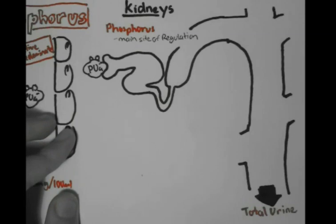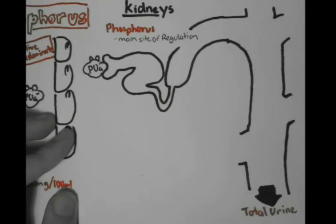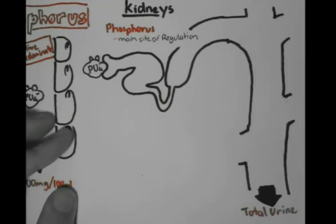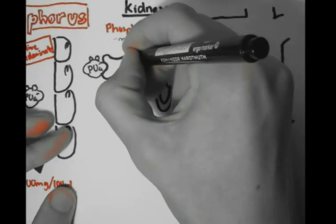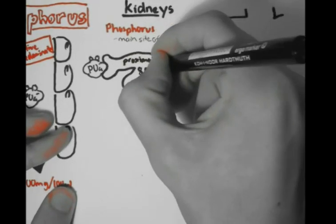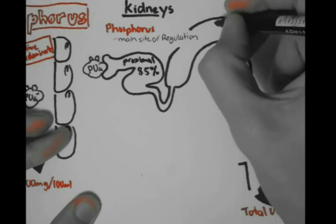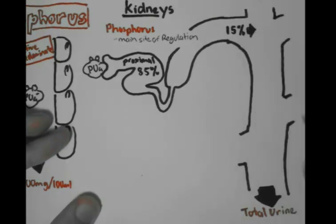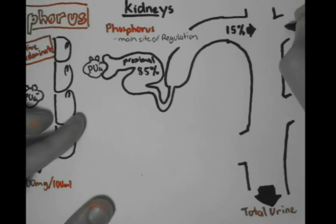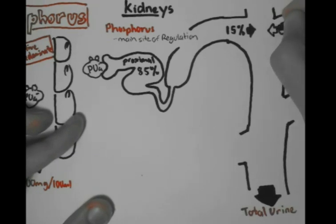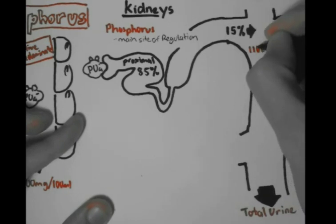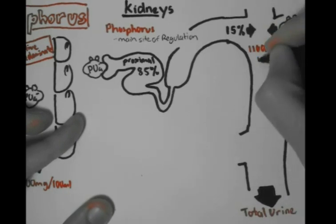For phosphorus, about 85% of the phosphorus filtered within the kidneys is absorbed in the proximal convoluted tubules, and the remaining 15% is excreted as total urine. This 15% represents the total amount of phosphorus secreted daily by the kidneys, which, from part 1, is 1,100 mg per 100 ml.